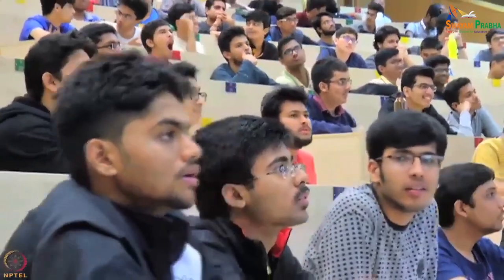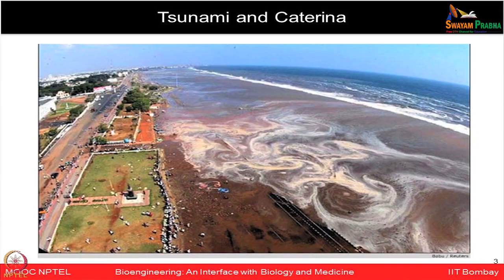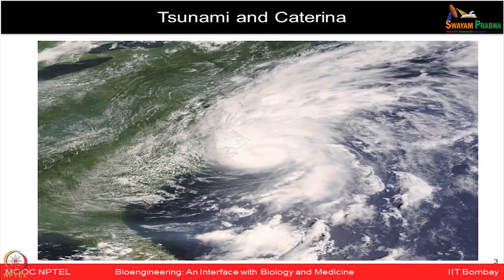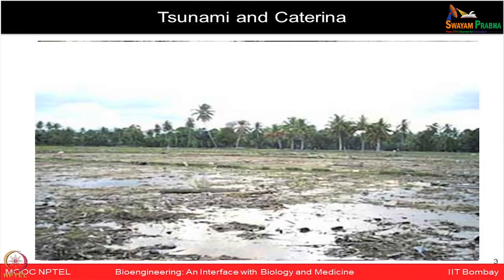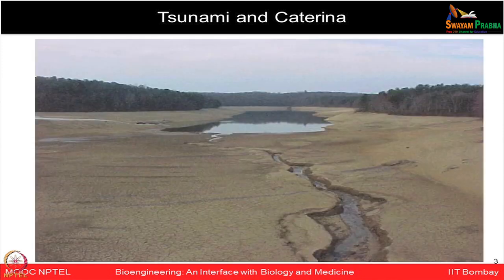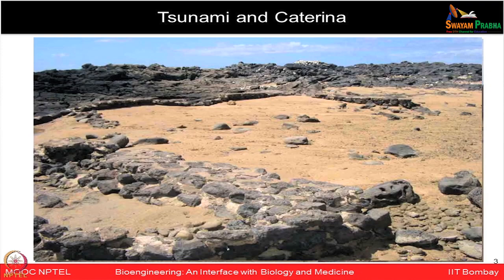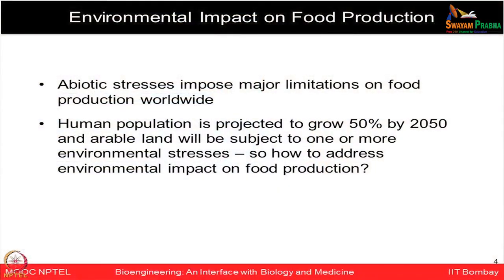As you can see in these images, various natural calamities like tsunamis and Katrina — many of these natural catastrophes — leave a huge impact not only on the climate at that time but also for years to come, as the whole land becomes barren and nothing could be grown on those fields. These abiotic stresses impose major limitations on food production worldwide.